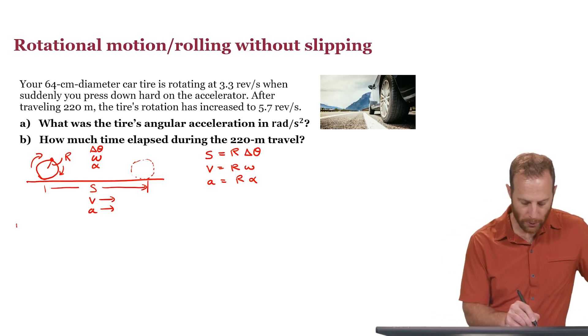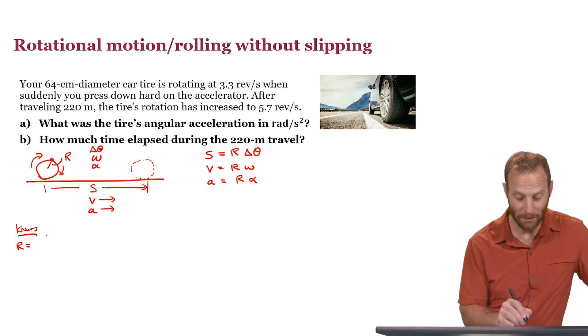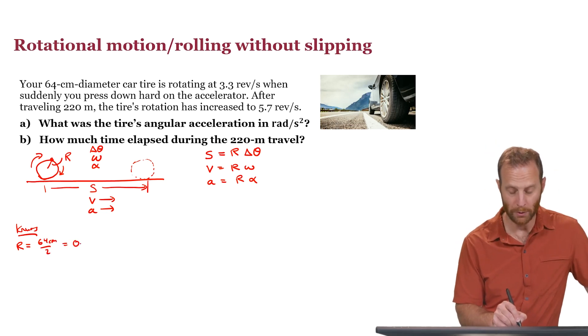Now, what are the knowns that we have here? We are told about the diameter of this wheel, so r would be half of the 64 centimeters. In other words, 32 centimeters, which we should write as 0.32 meters.